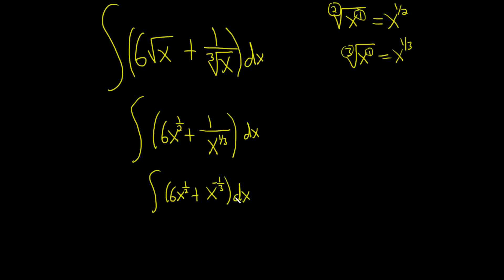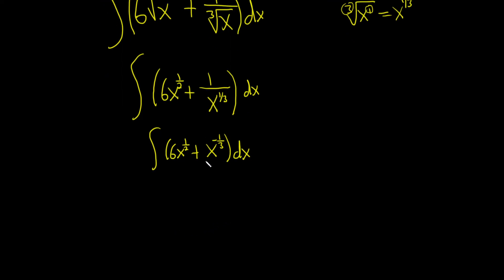Now we can use the power rule. The power rule basically says we just add 1 to the exponent and divide.